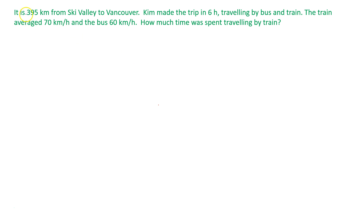Let's look at this problem. It is 395 kilometers from Ski Valley to Vancouver. Kim made the trip in six hours traveling by bus and train. The train averaged 70 kilometers per hour and the bus 60 kilometers per hour. How much time was spent traveling by train?